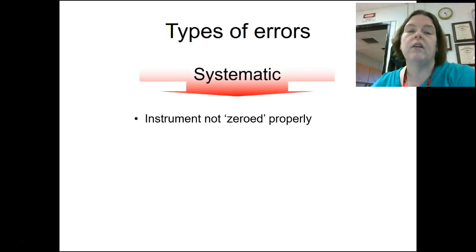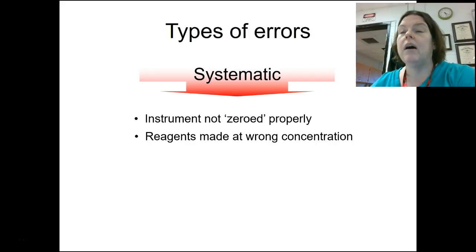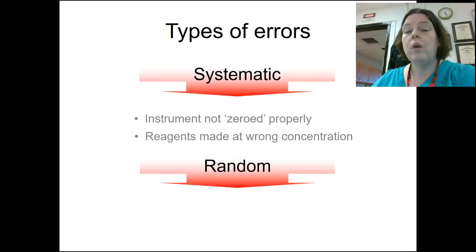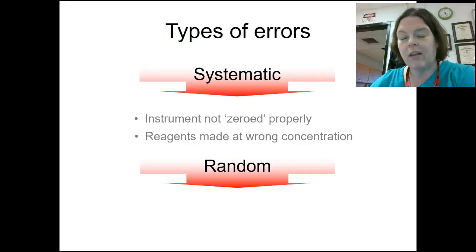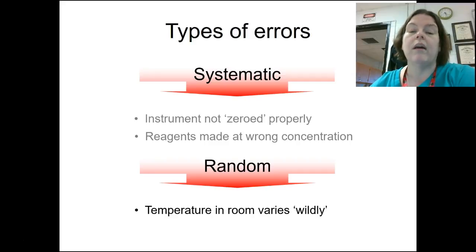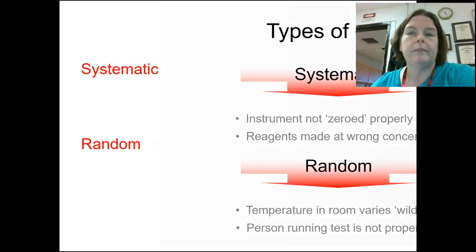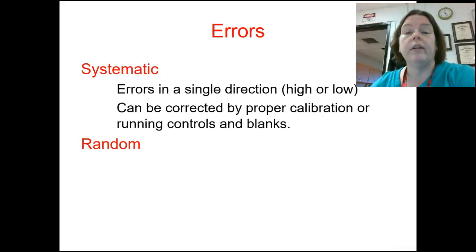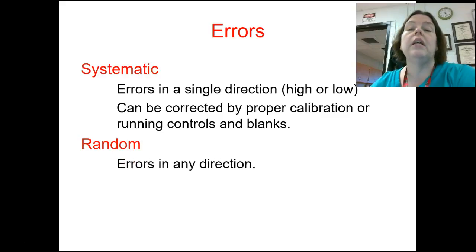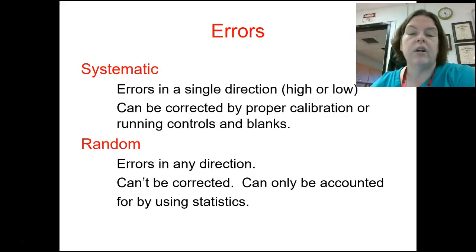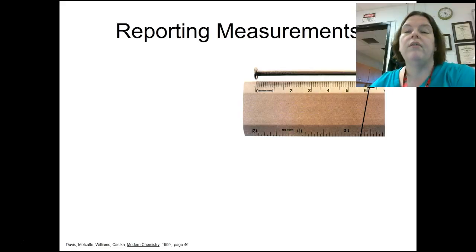Types of errors: systematic errors — for example, we didn't zero the instrument properly so it didn't read mass correctly, or we made a chemical with the wrong concentration and used that instead. Systematic errors are ones the instrument creates that we can't individually control, but we can correct them by calibrating. Random errors are things like temperature in the room varying wildly — we can't control that. Errors that go consistently in one direction are usually systematic; errors that can happen in any direction can only be accounted for by statistics.